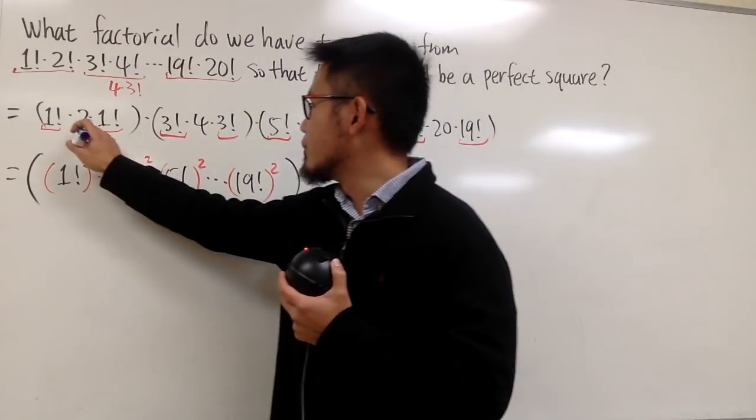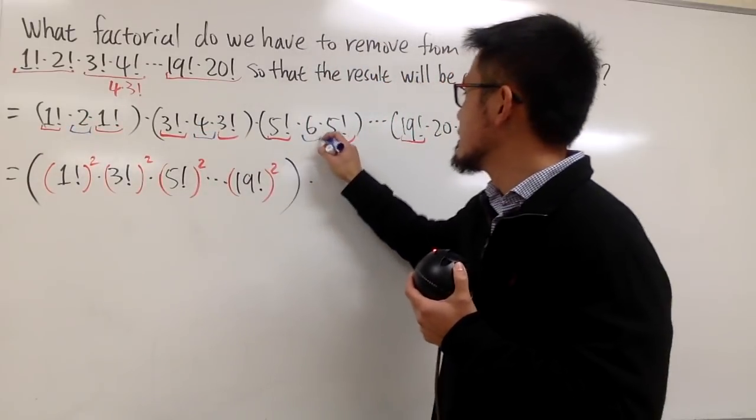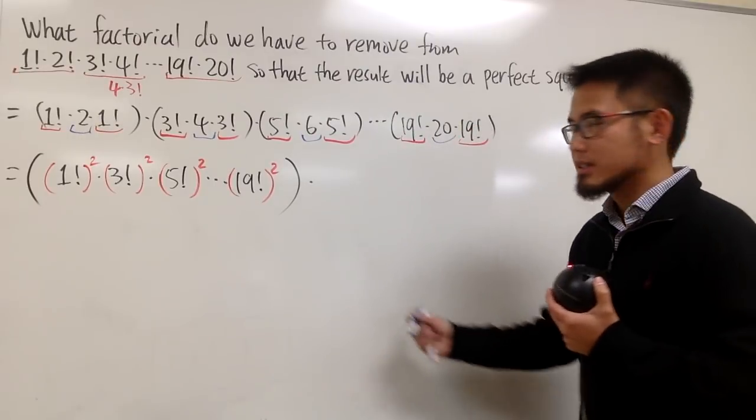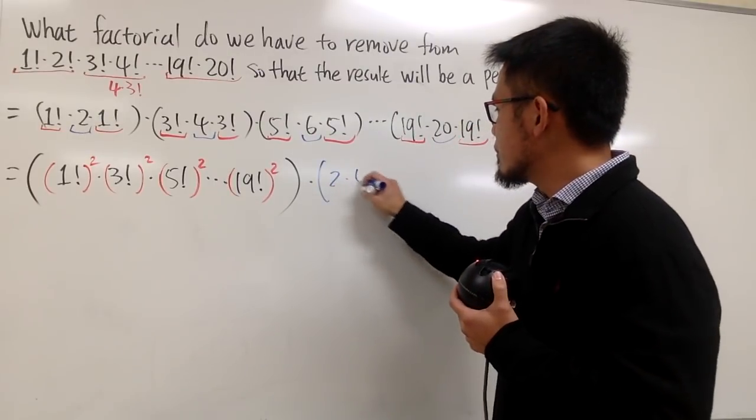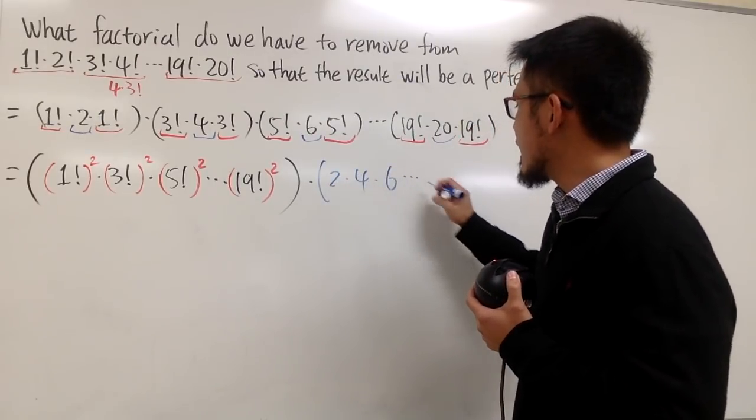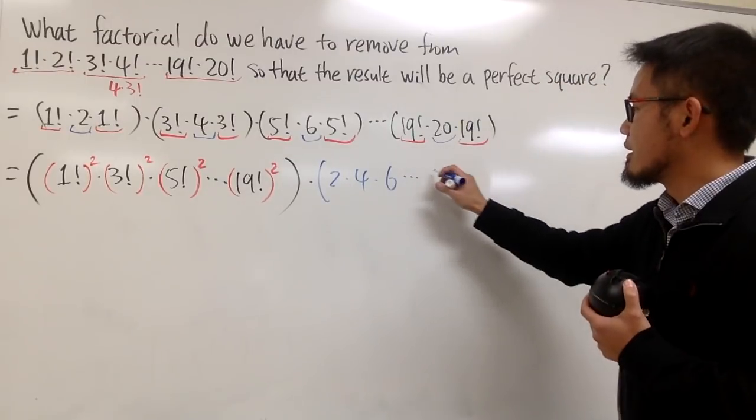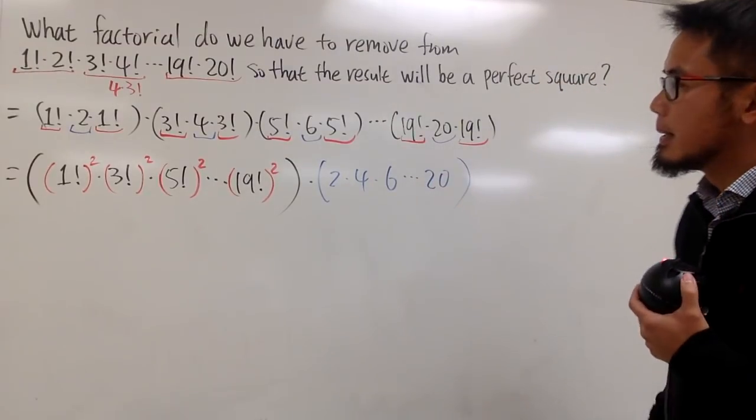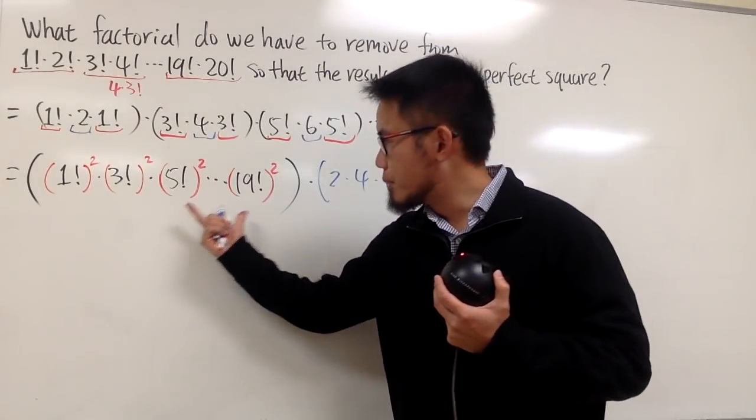So here we have 2, in blue, 4, 6, and the last one is 20, so let's go ahead and put that down. Times 2, 4, 6, dot, dot, dot, you know, 18, and then the last one is 20, like this. So this is a perfect square.